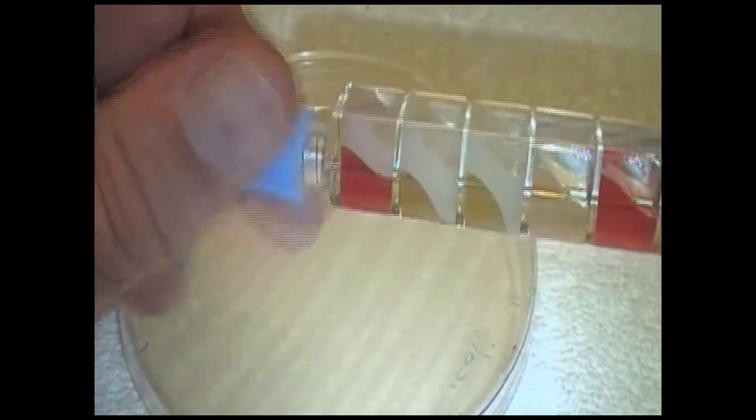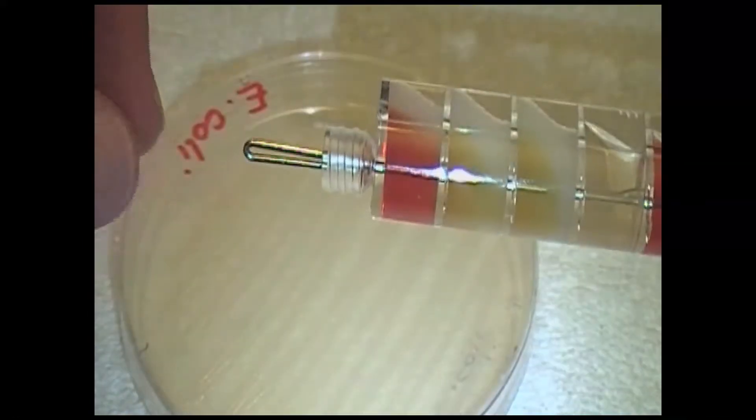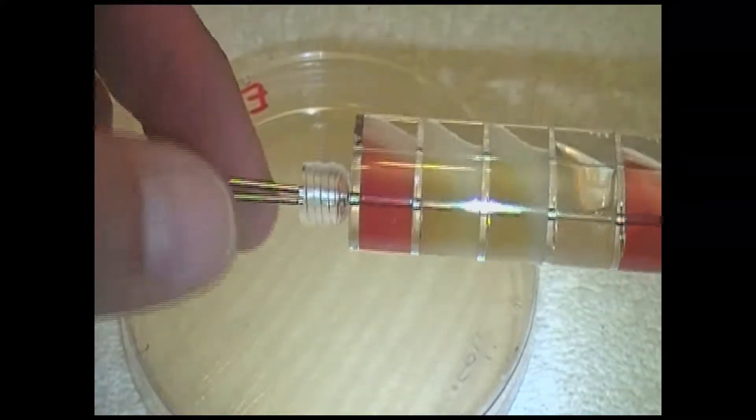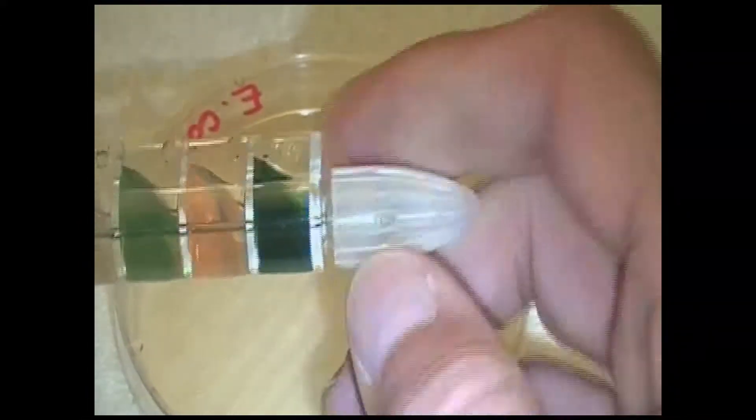We are going to start by taking this end off. This end, the little wire is bent. This wire is sterile. Then we're going to come down to the other end, and we are going to take the little cap off.